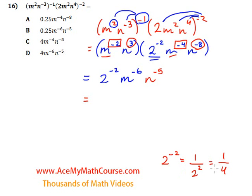So we have 0.25 m to the negative 6, n to the negative 5. So the answer is B. That's it.